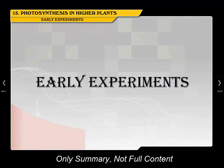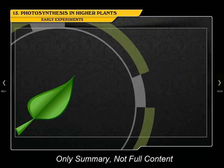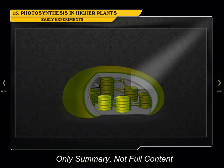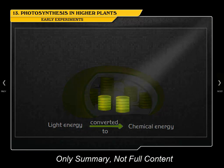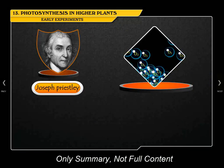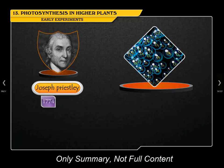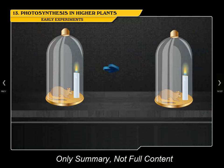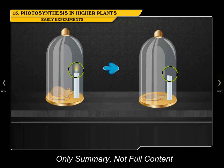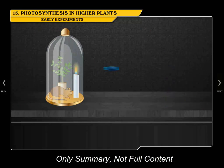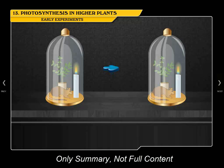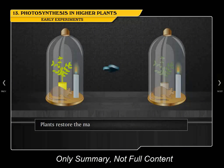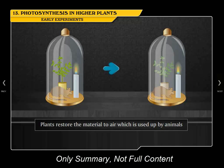Early experiments. There are many simple experiments performed to understand the concept of photosynthesis. Joseph Priestley discovered the presence of oxygen in 1774. He observed that a candle burning in a bell jar soon gets extinguished, and a mouse kept in the same place got suffocated. But when he placed a mint plant in the same bell jar, the mouse stayed alive and the candle continued to burn. He concluded that plants restore the material to air which is used up by breathing animals and burning candles.